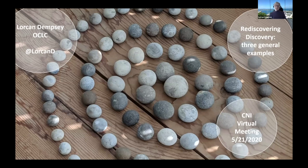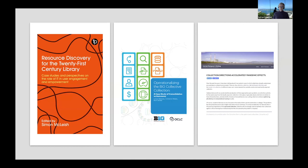I'm going to talk about three things very briefly that are quite high level, and I think will impact the way we think about discovery over the next while — they accelerate current trends. My comments are partly based on three sources: a forthcoming book, Resource Discovery for the 21st Century Library, coming from FACET publishing in the UK; the BTA report; and a blog entry I released a couple of days ago talking about ways in which collections have changed in the current environment.